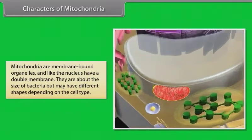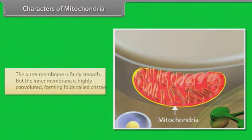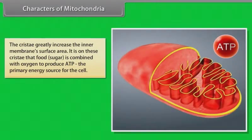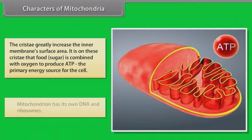Mitochondria are membrane-bound organelles and, like the nucleus, have a double membrane. They are about the size of bacteria but may have different shapes depending on the cell type. The outer membrane is fairly smooth, but the inner membrane is highly convoluted, forming folds called cristae. The cristae greatly increase the inner membrane's surface area. It is on these cristae that food (sugar) is combined with oxygen to produce ATP, the primary energy source for the cell. Mitochondria have their own DNA and ribosomes.